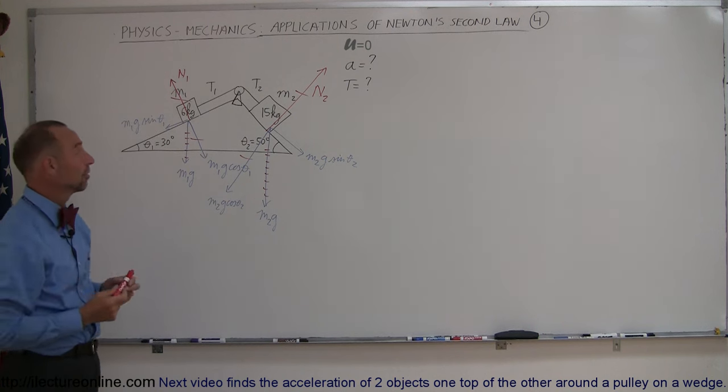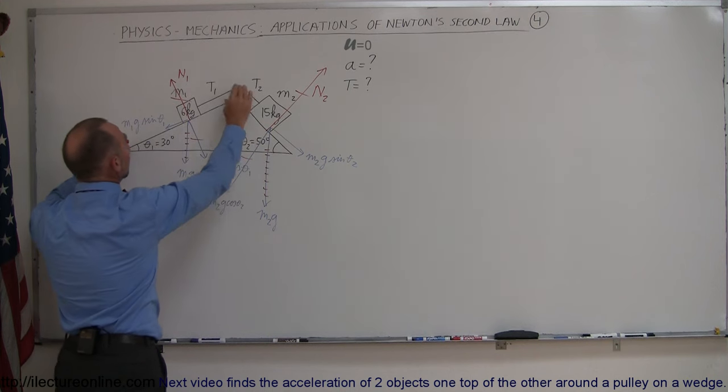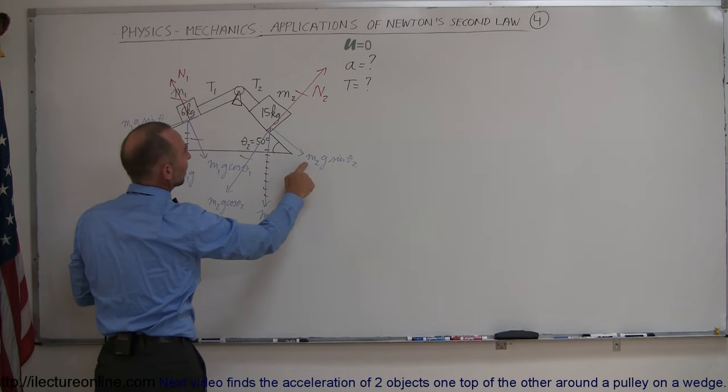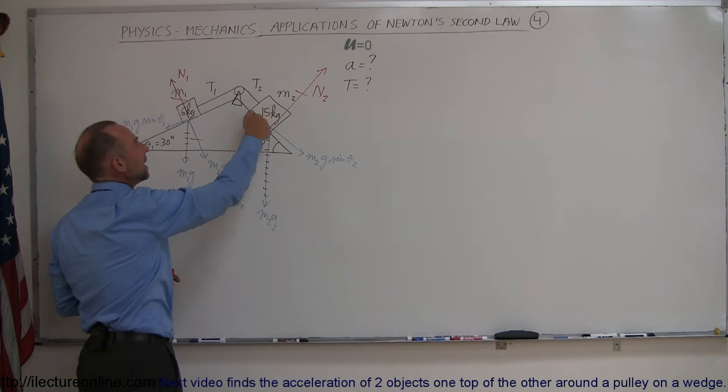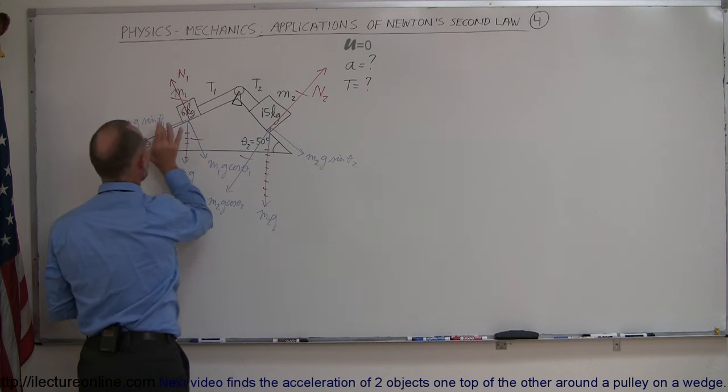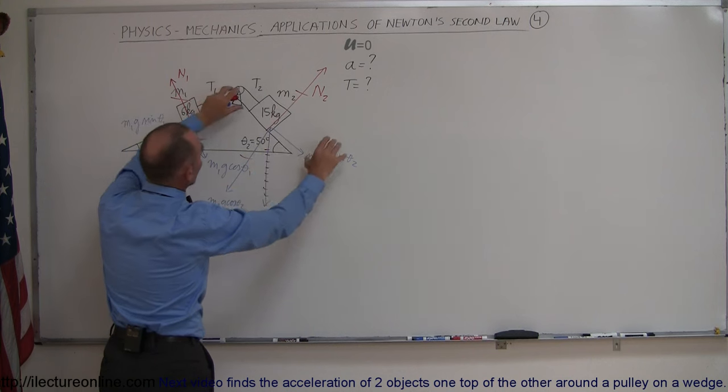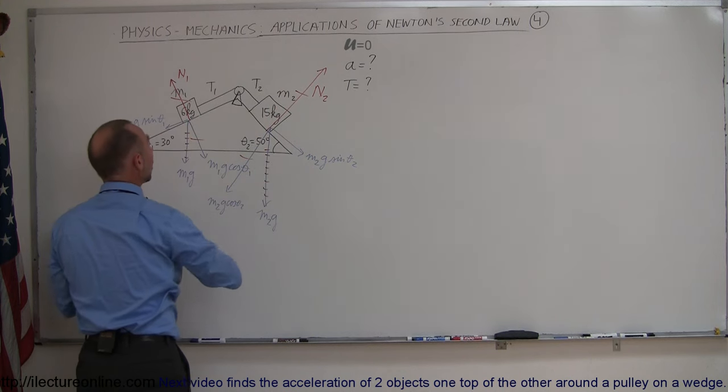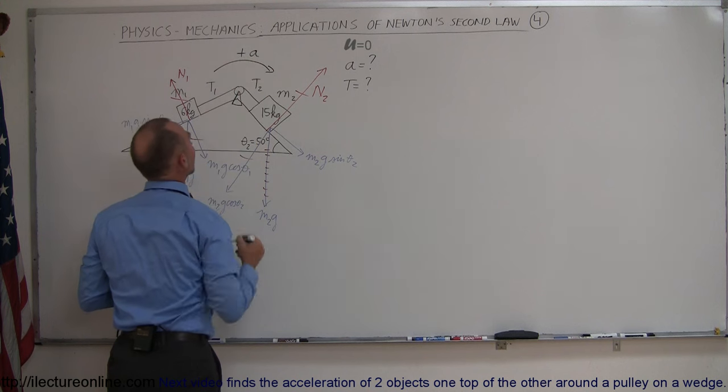So we only have two forces left which is this force m1g sine theta pulling the whole system in this direction, and here we have m2g sine theta two pulling the whole system in this direction. This being a heavier object on a steeper incline, I would think that this is a bigger force than this and therefore I would assume that the whole system would be accelerating in this direction. So I'm going to call acceleration in this direction to be the positive direction.